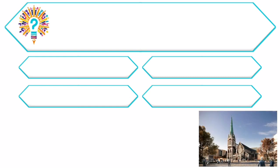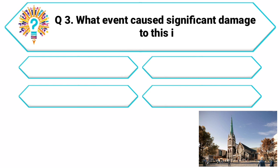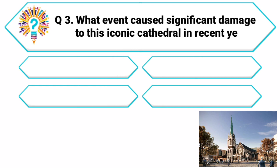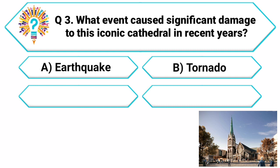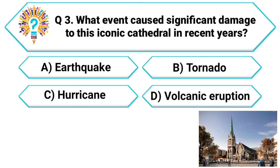Question 3. Now, let's explore the mesmerizing Christchurch Cathedral in New Zealand. What event caused significant damage to this iconic cathedral in recent years? Your options are: A. Earthquake, B. Tornado, C. Hurricane, D. Volcanic Eruption.